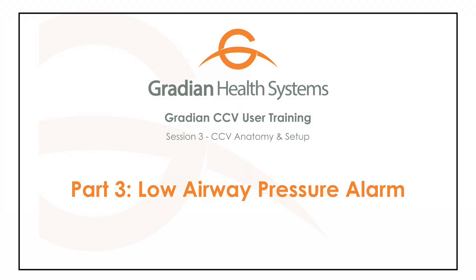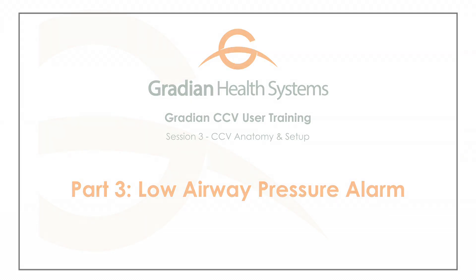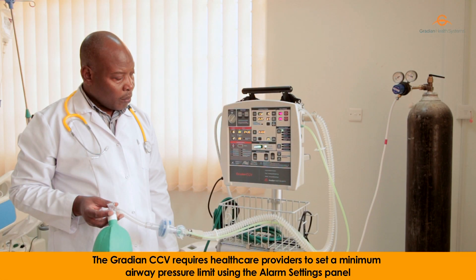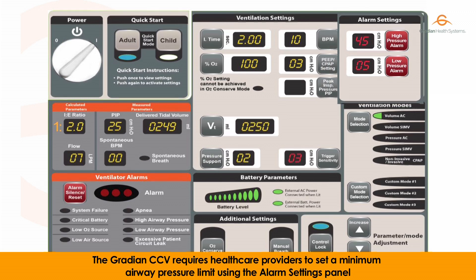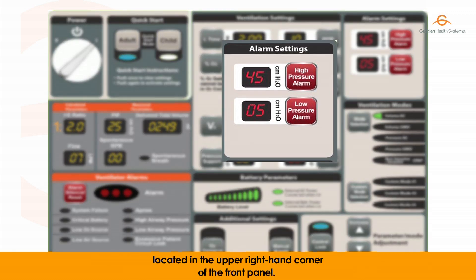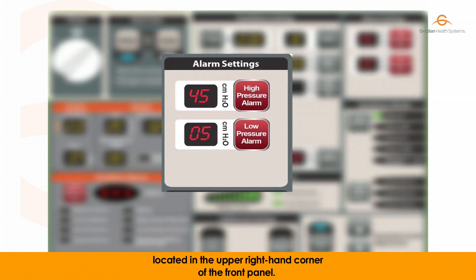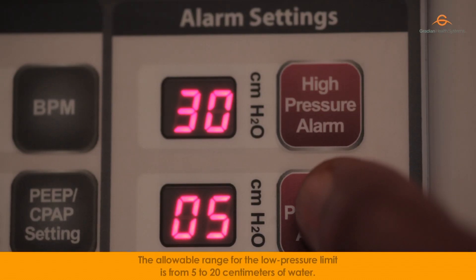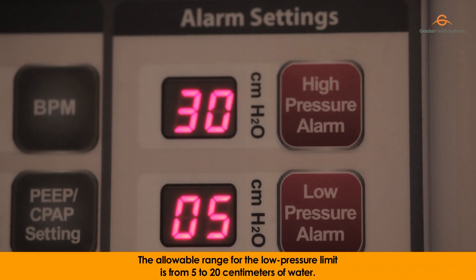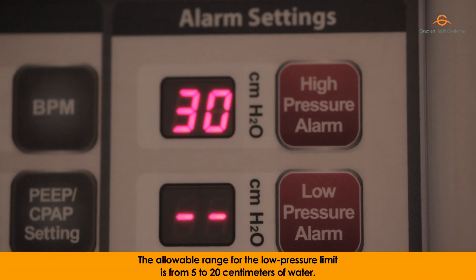Low Airway Pressure Alarm. The Gradient CCV requires healthcare providers to set a minimum airway pressure limit using the alarm settings panel located in the upper right hand corner of the front panel. The allowable range for the low pressure limit is from 5 to 20 cm of water.